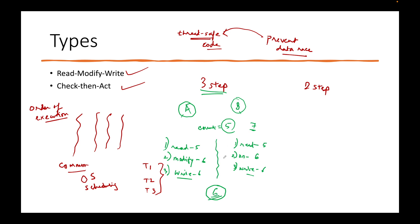We are getting 6 instead of 7 because the operations between Thread A and B were interleaved. This is the key term. The operation was not atomic. An atomic operation means there is no thread interference — at one shot the thread reads, modifies, and writes all three steps together. In this case it was not atomic. There can be many combinations of interference at every step, leading to even more incorrect results. Because the operations are not atomic, threads get interleaved and we get incorrect results.